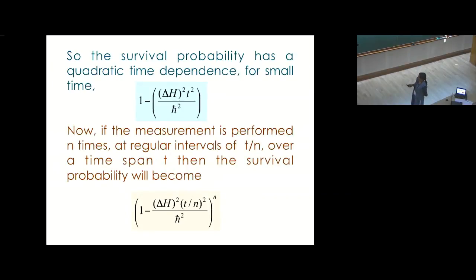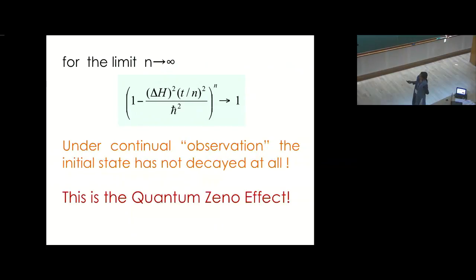Now, if the measurement is performed n times at regular intervals of T by n over a time span T, then the survival probability will become (1 minus delta H square T by n square upon H cross square) raised to n. So now, for the limit n tends to infinity, this survival probability will tend to 1.